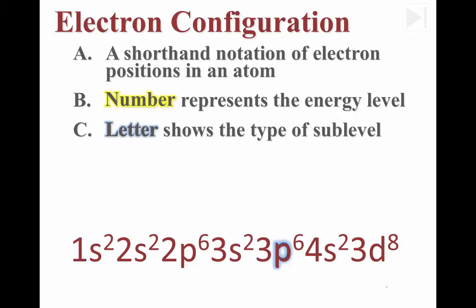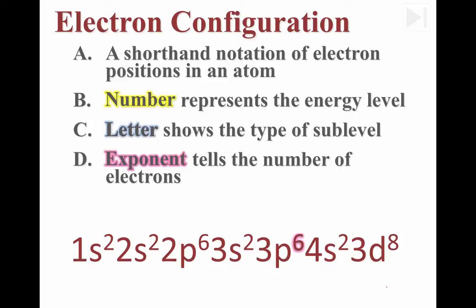So a p sublevel, for example, has a maximum capacity of 6 electrons. And that leads us to the third part of this notation, the exponent. The exponent tells us how many electrons are in that sublevel.